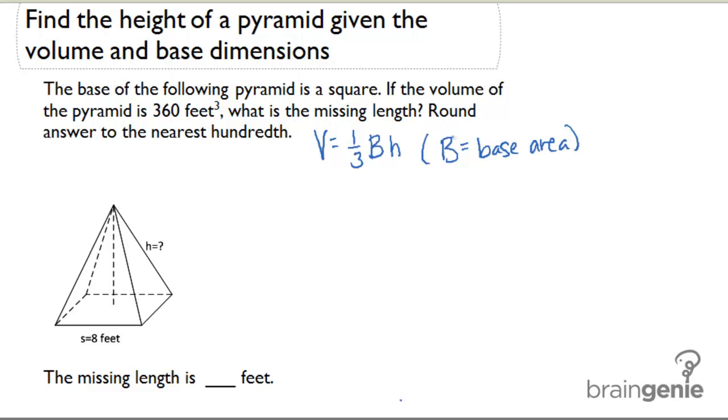Okay, let's look for the given information in this problem. It says the base of the following pyramid is a square. If the volume of the pyramid is 360 feet cubed, what is the missing length? Round your answer to the nearest hundredth.